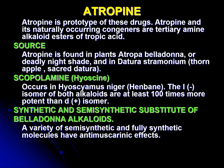The source of scopolamine, which is hyoscine, occurs in Hyoscyamus niger, which is also called henbane. The L-isomer of both alkaloids is at least 100 times more potent than the D-isomer. A variety of semi-synthetic and fully synthetic molecules have been developed with anti-muscarinic effects.